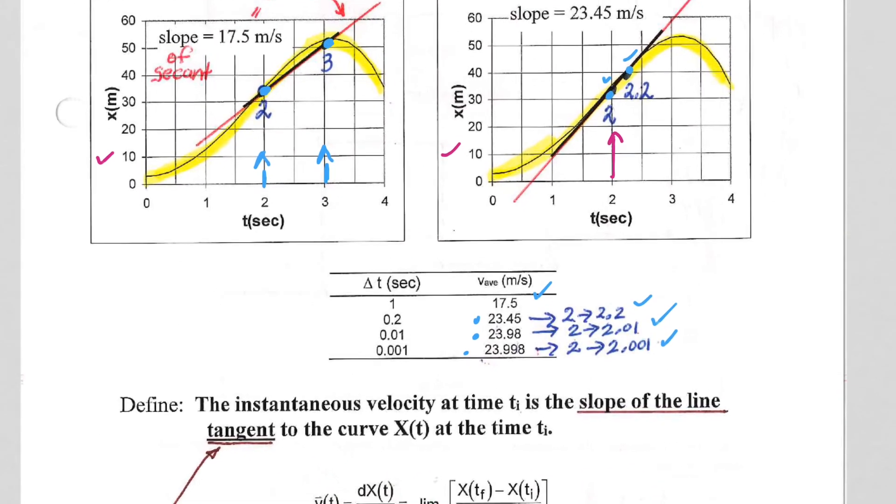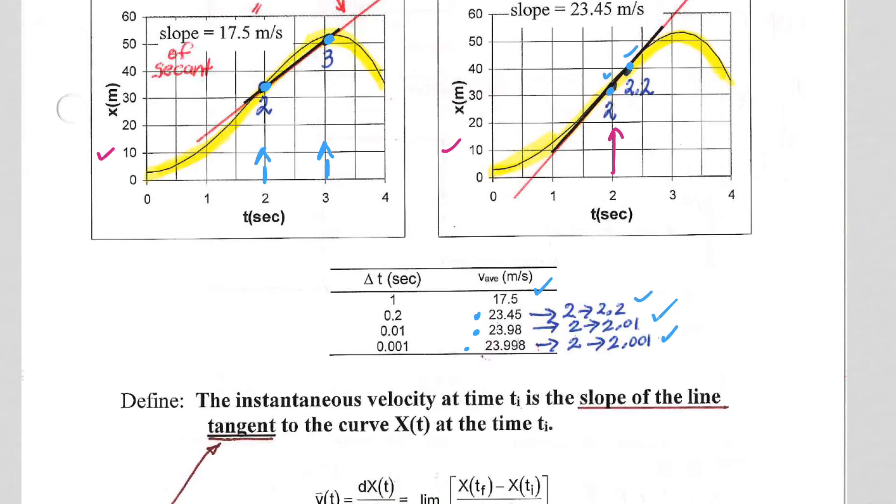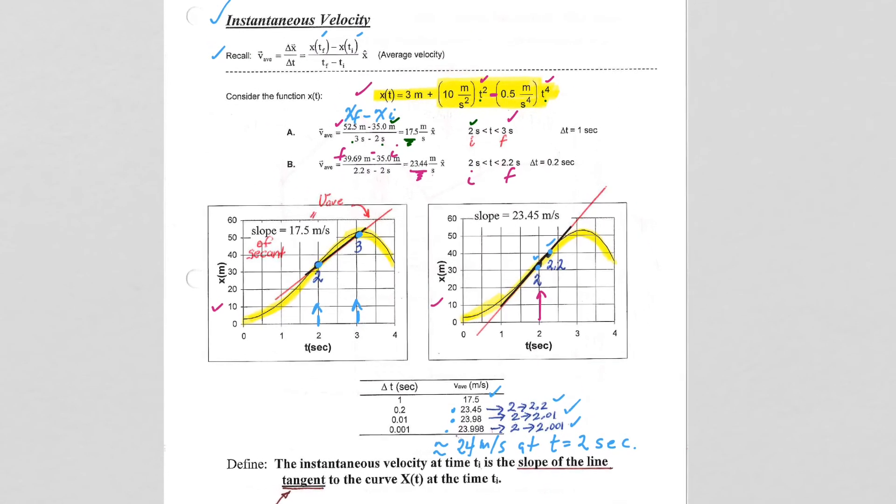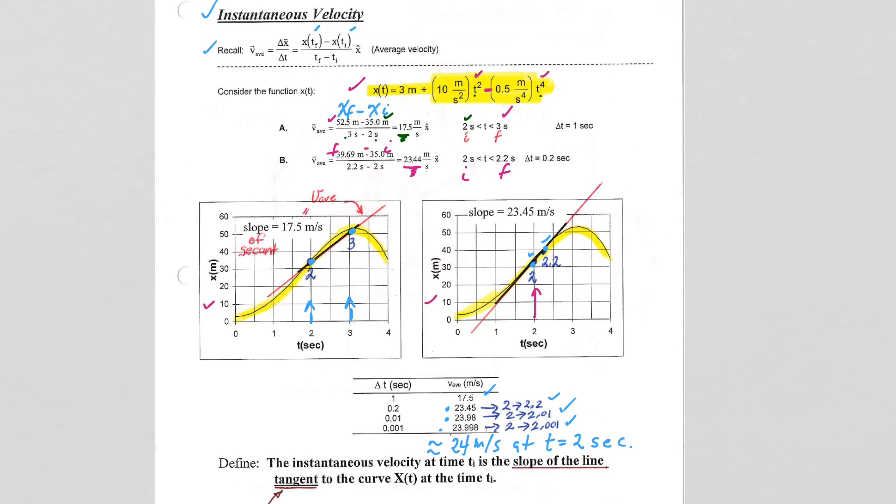I think you can see what is going on here. We are going to close in on approximately 24 meters per second right at time t equals 2 seconds. That's the notion of instantaneous velocity. It's really nothing more than an average velocity calculation over a really, really small, and in math terms, infinitesimally small time interval.